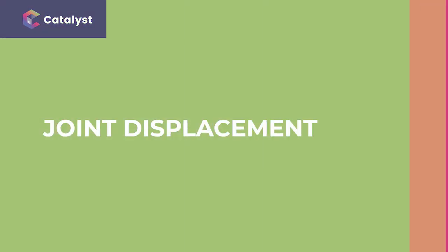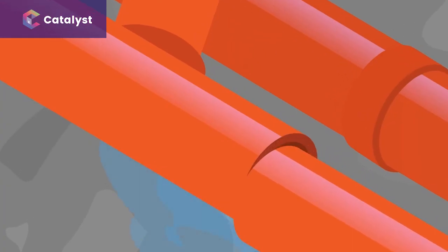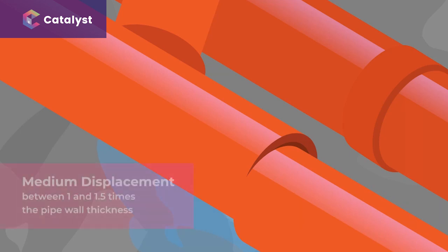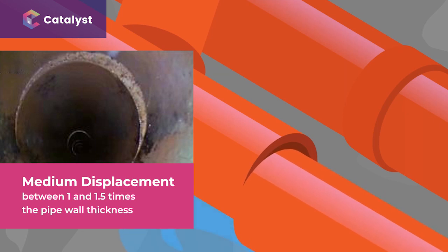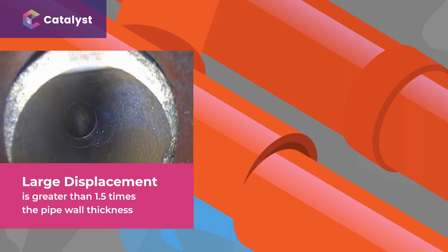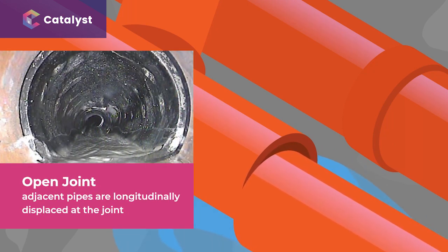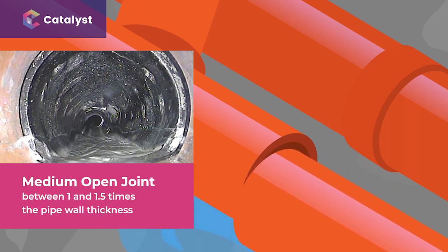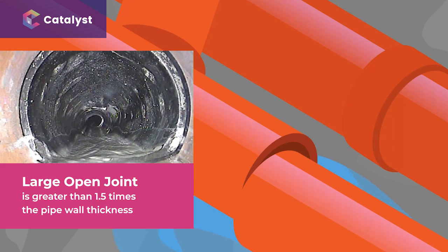Let's start with joint displacement. Joint displacement is where the pipe is not concentric with the socket of the adjacent pipe. A medium displacement is between one and one and a half times the pipe wall thickness. A large displacement is greater than one and a half times the pipe wall thickness. An open joint is where adjacent pipes are longitudinally displaced at the joint. A medium open joint is one to one and a half times the pipe wall thickness; a large open joint is greater than one and a half times thickness.